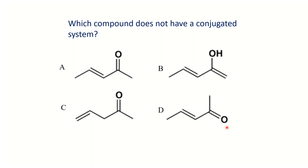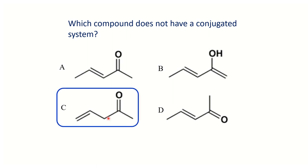A practice question: which compound does not have a conjugated system? Immediately you realize that every compound except C has a conjugated system. Compound C shows an isolated system — there is an sp3 carbon, and that double bond is therefore isolated from the other double bond.